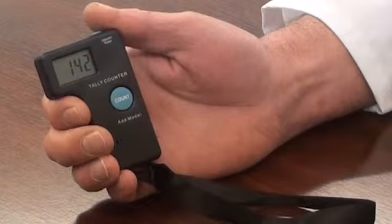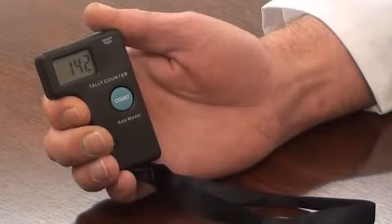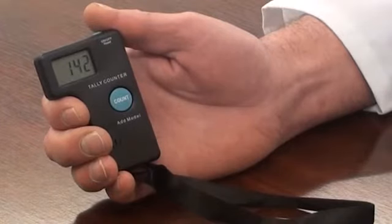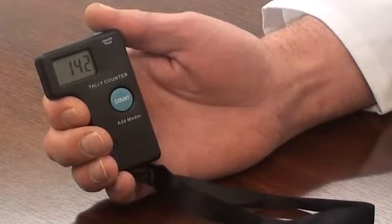An Auto Power Off program activates after 2 hours of no activity. It does, however, return to the last counted number when the counter is switched back on.